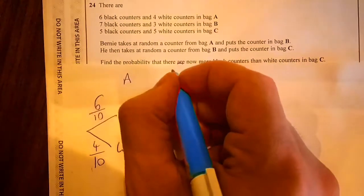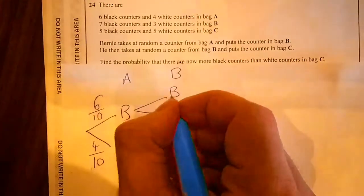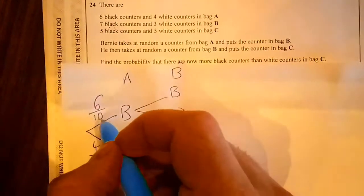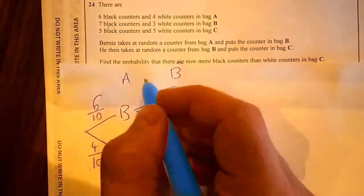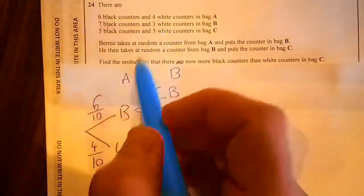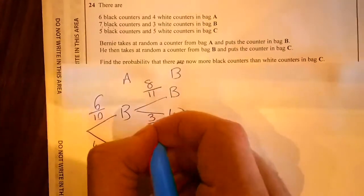My next one will be your B bag. I've got 2 options which is black and white again. Now in this occasion it's got 7 black ones but I've got 1 extra because he takes it out and puts it back. Which means I've got 8, and even though 7 plus 3 is 10, I've got an extra black one which will make it 11. Plus it will be 3 out of 11 for white.